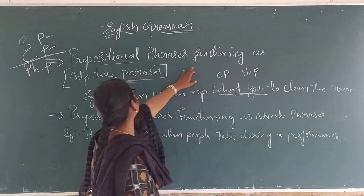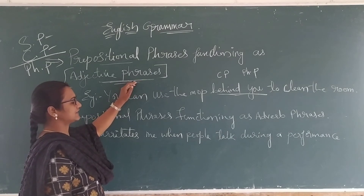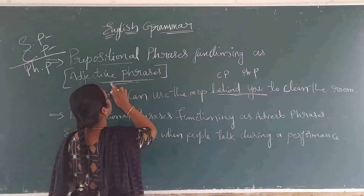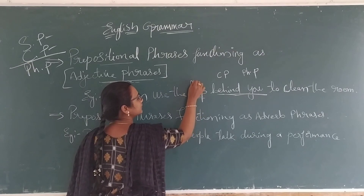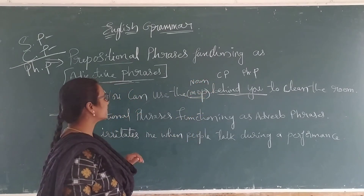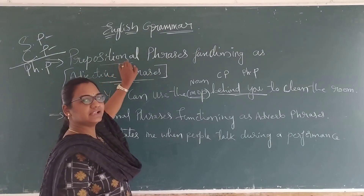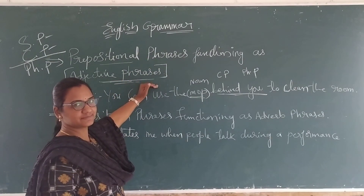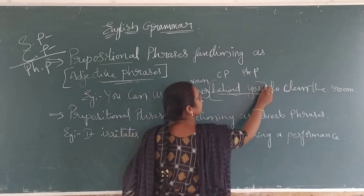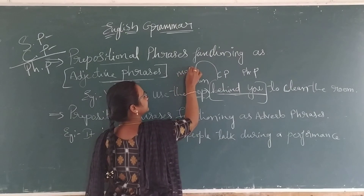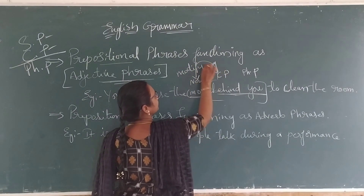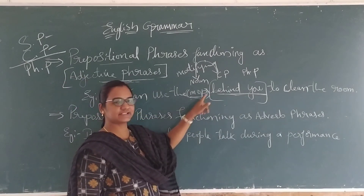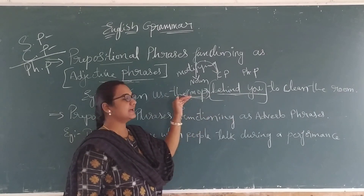Now, how is it functioning as an adjective? 'Behind you to clean the room' is functioning as an adjective phrase for the noun 'mom.' These are prepositional phrases which function as adjective phrases. This phrase is modifying the noun, so it is called an adjective phrase. Such kinds of phrases are called adjective phrases.